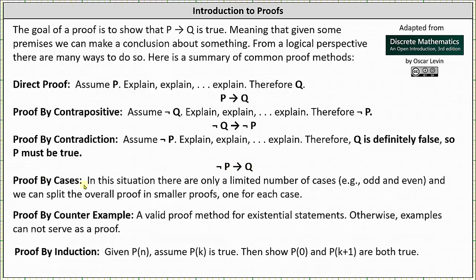We also have proof by cases. In this situation there are only a limited number of cases, for example odd and even, and we can split the overall proof into smaller proofs, one for each case. We also have proof by counter example. This is a valid proof method for existential statements; otherwise, examples cannot serve as a proof.